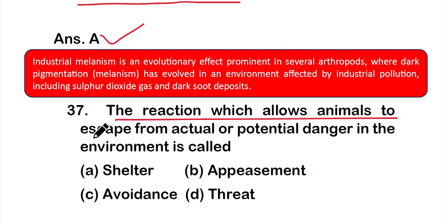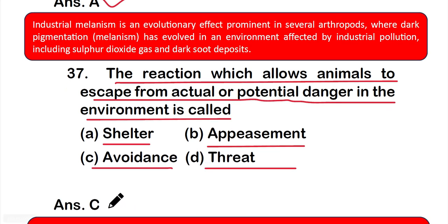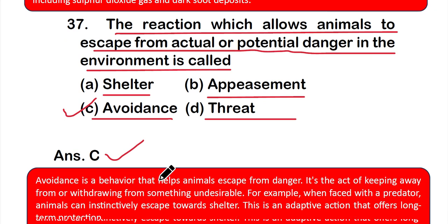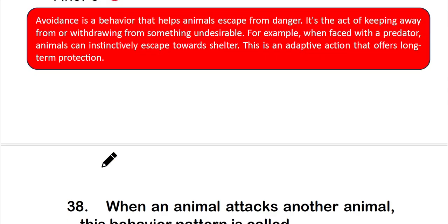Question number 37: The reaction which allows animals to escape from actual or potential danger in the environment is called — option A: shelter, option B: appeasement, option C: avoidance, or option D: threat. The correct answer is option C — avoidance. Avoidance is a behavior that helps animals escape from danger — the act of keeping away from or withdrawing from something undesirable, such as instinctively escaping towards shelter when faced with a predator.